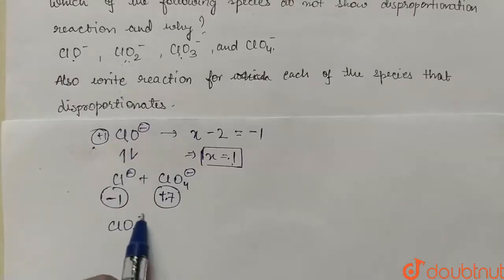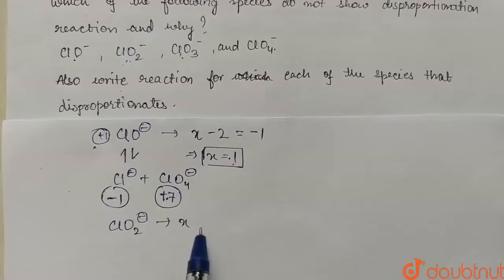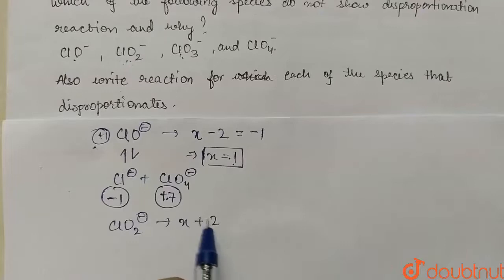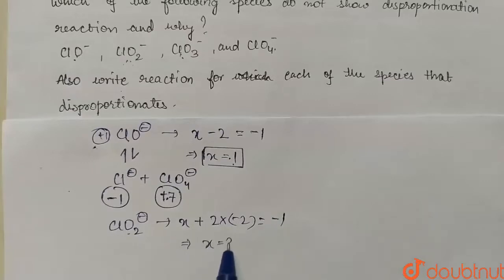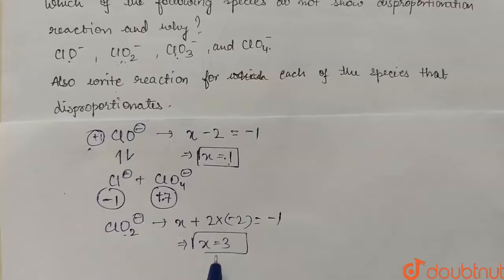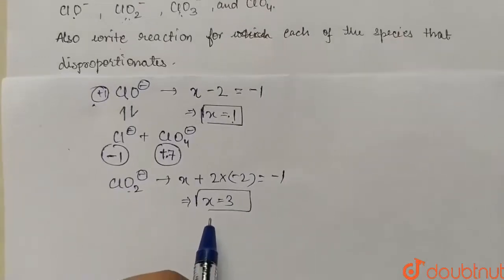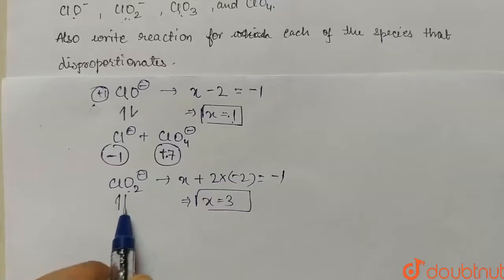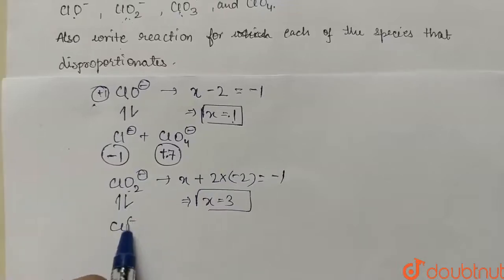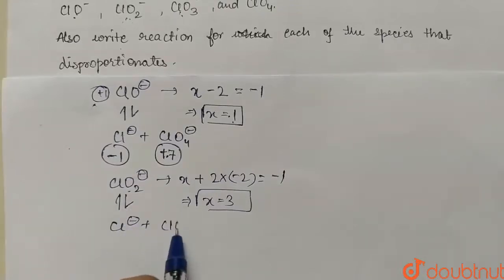Second, we have ClO₂⁻. The oxidation number of chlorine will be x, then we have plus two times minus two since we have two oxygens, and the total charge is minus one. From here x comes out to be plus three. Since it is also an intermediate oxidation state, ClO₂⁻ will also disproportionate into Cl⁻ and ClO₄⁻.